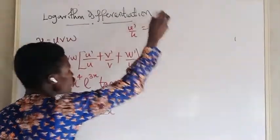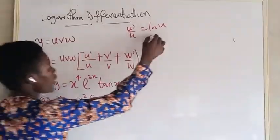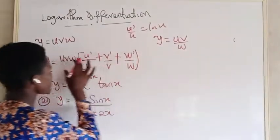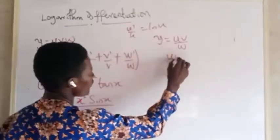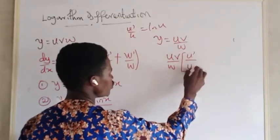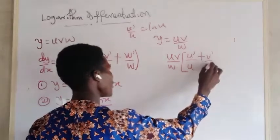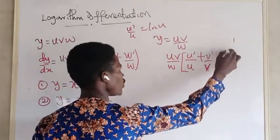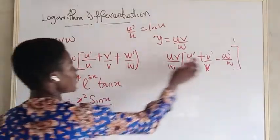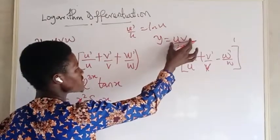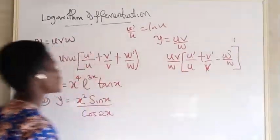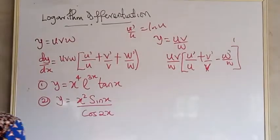And if I have a function like y equals uv over w, that would be: uv over w, multiplied by u prime over u, plus v prime over v, minus w prime over w. The reason this last term is minus is because in indices, division turns to minus. So that's why we have minus here. All right, so let's go into examples.